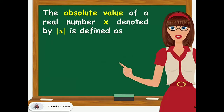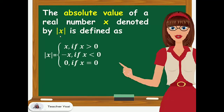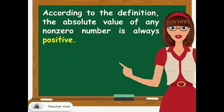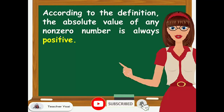The absolute value of a real number x, denoted by |x|, is defined as: the absolute value of x is equal to x if x is greater than 0 (positive); the absolute value of x is negative x if x is less than 0 (negative); and the absolute value of x is 0 if x is equal to 0. According to the definition, the absolute value of any non-zero number is always positive.